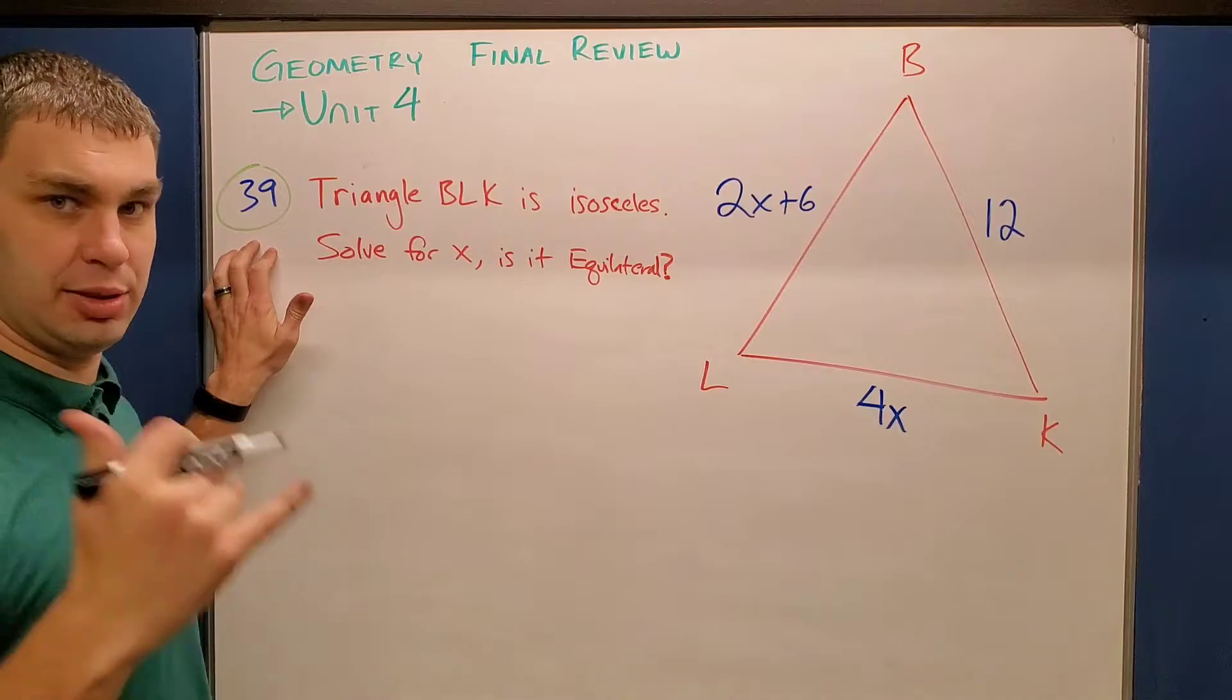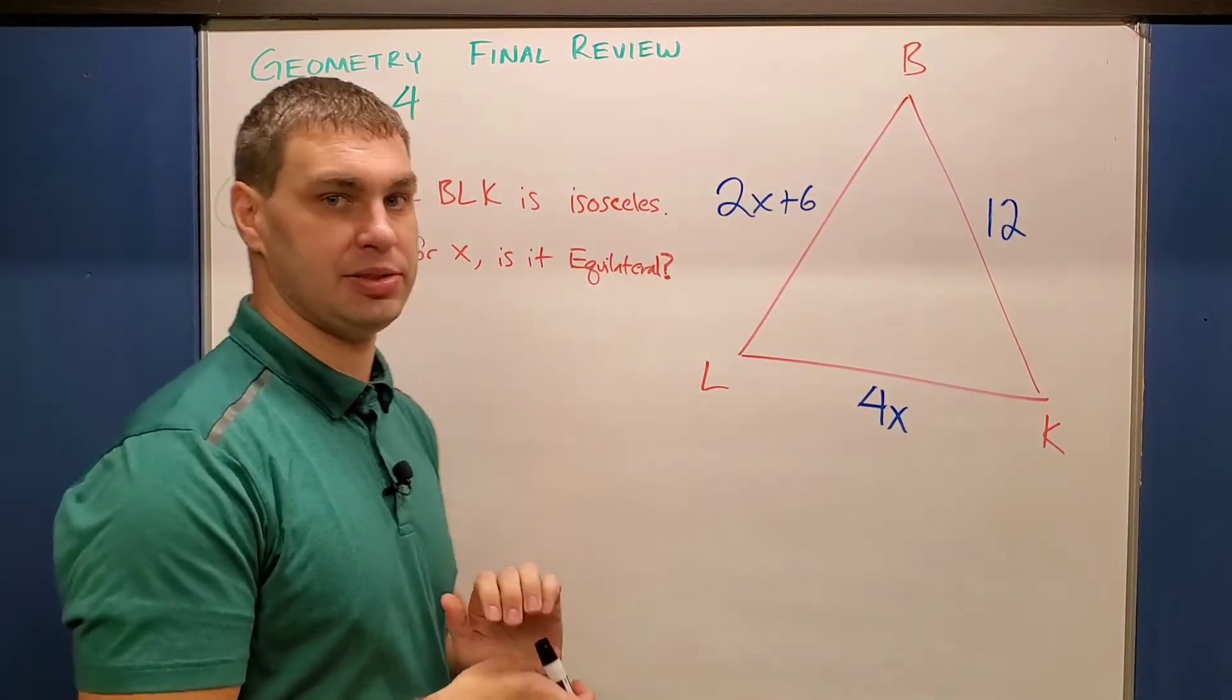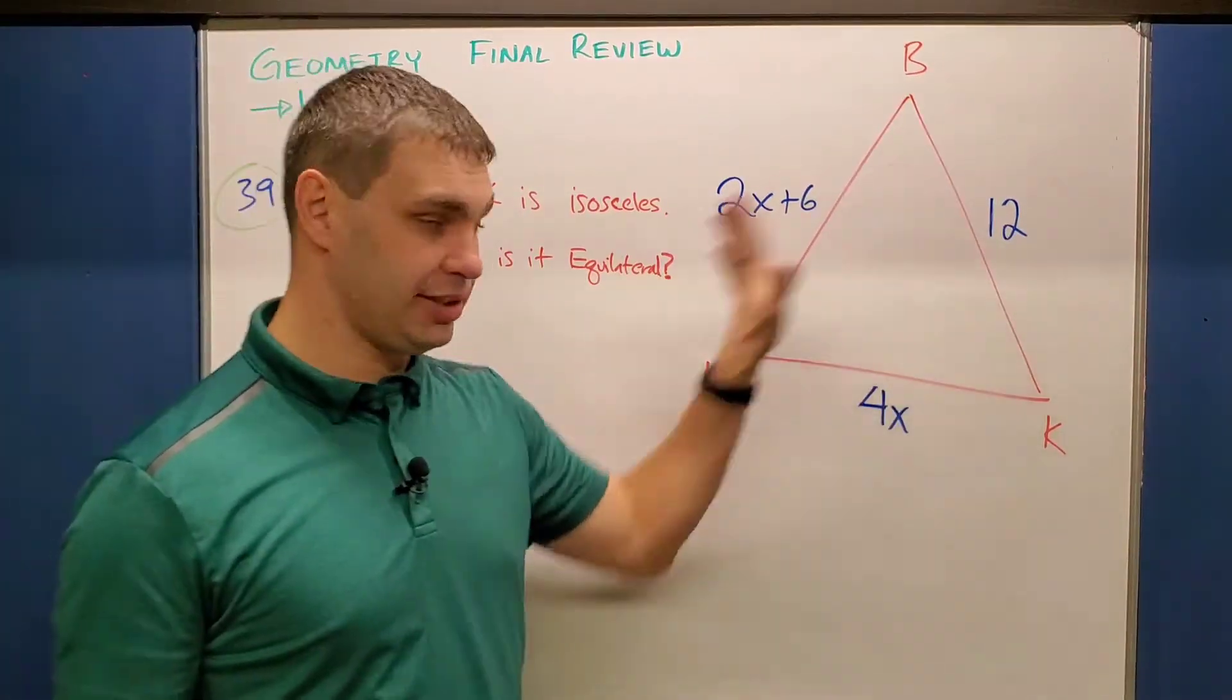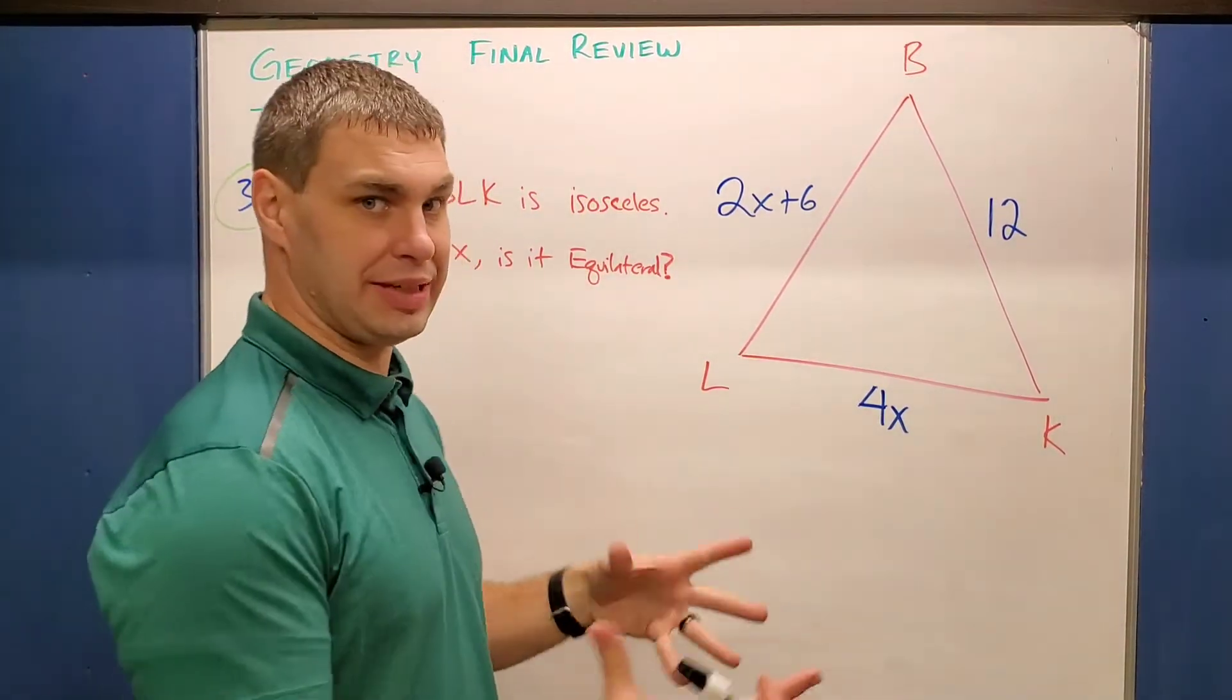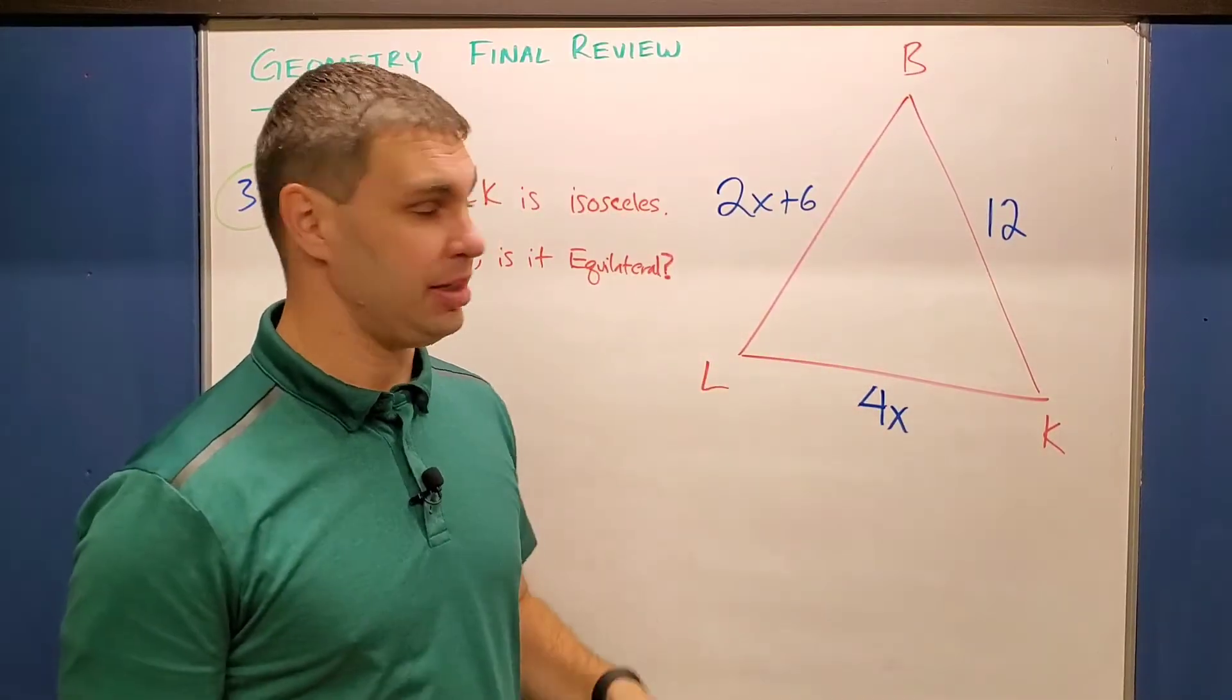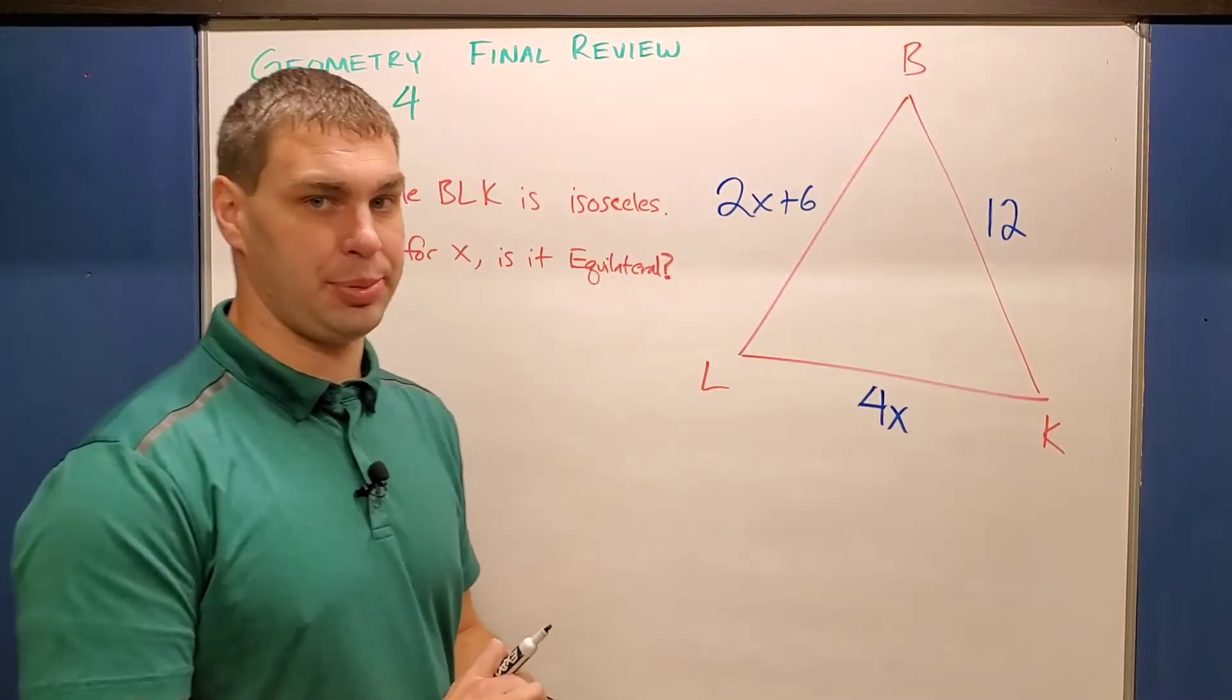Once again, if you're my student, this is number 39 in your final review packet. Otherwise this problem should be able to help you anyway. It says triangle BLK is isosceles. So this thing over here is isosceles somehow. It also says solve for X and then is it equilateral. Normally when they give you an isosceles triangle, they tell you which sides are congruent. They don't do that here.